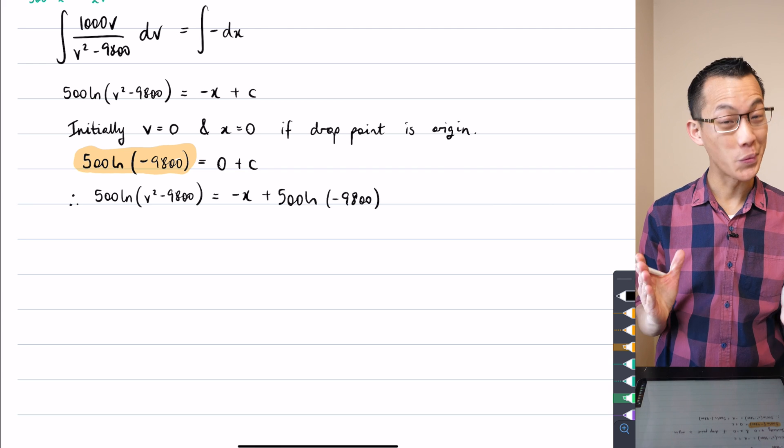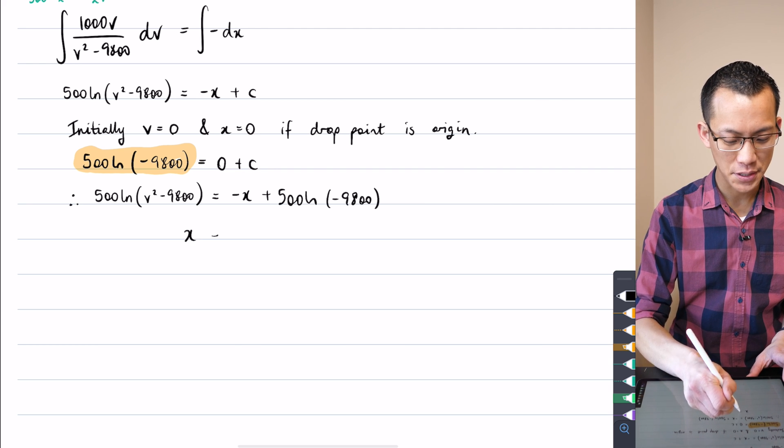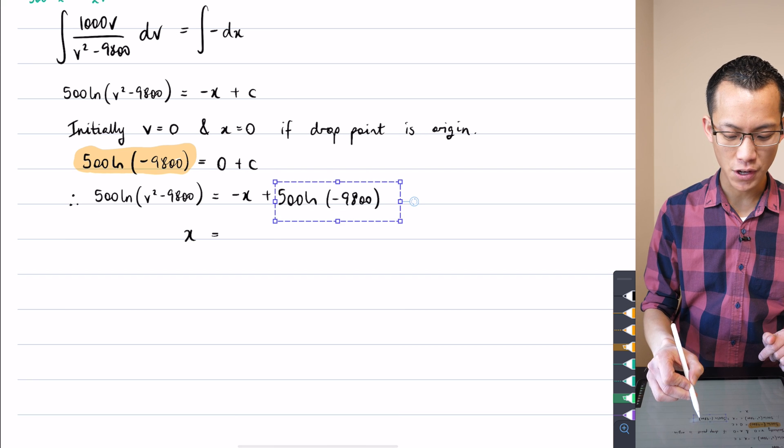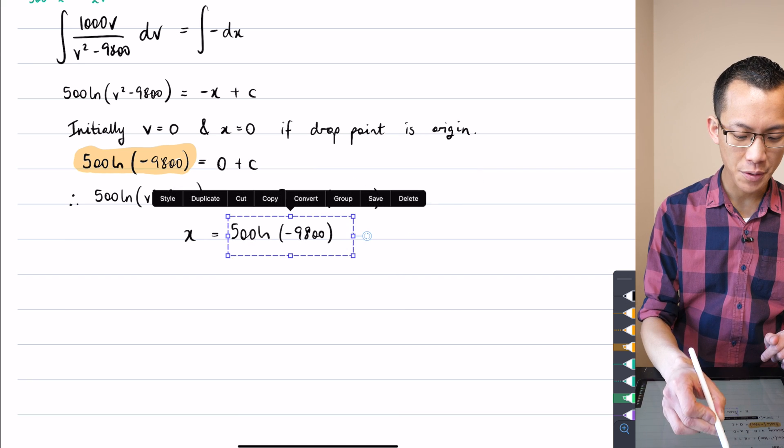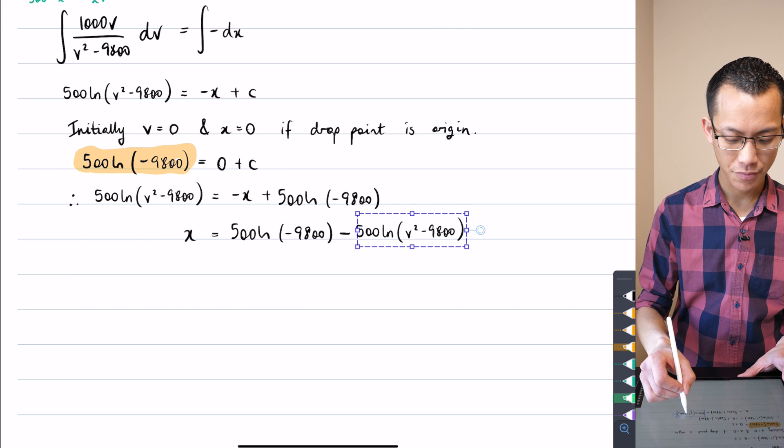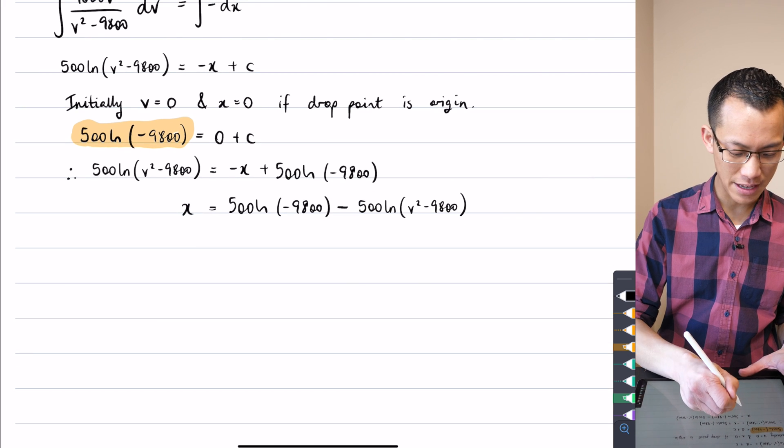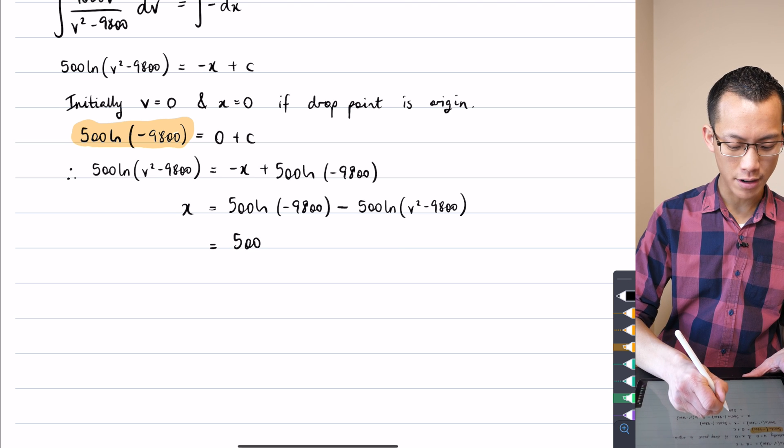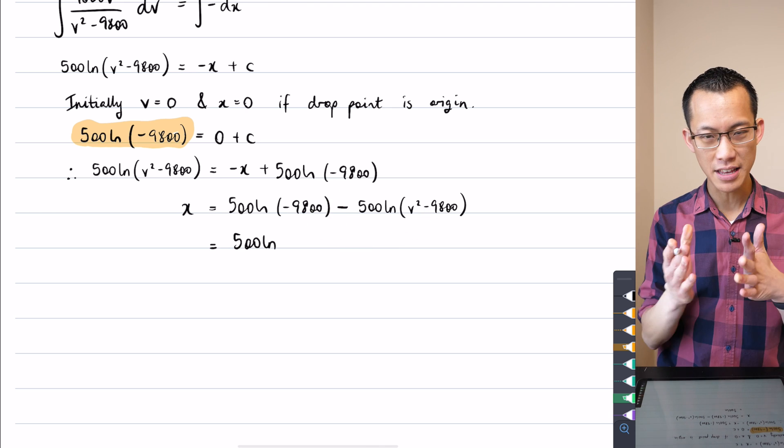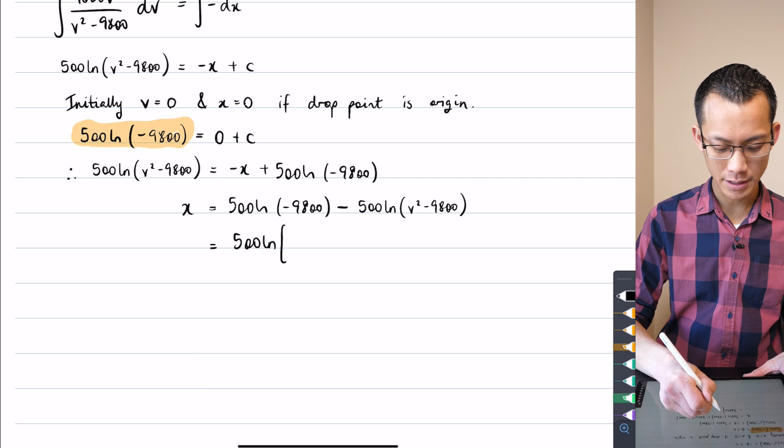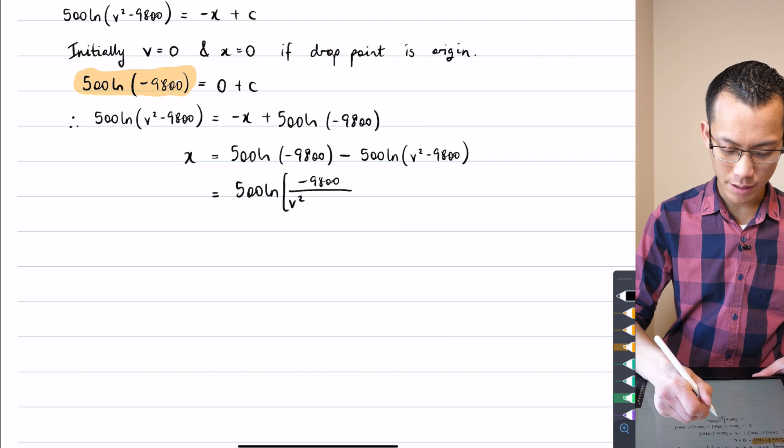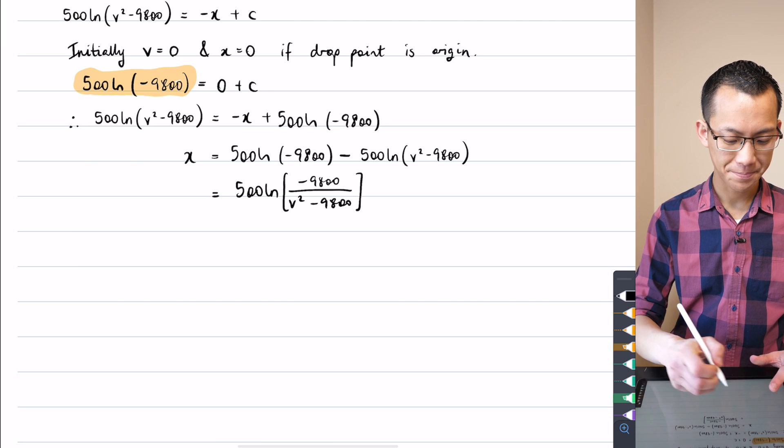All right and now what I want to do here is I just want to rearrange this a bit. If I add x to both sides that will make x positive and now it's the subject. I'm going to subtract this term from both sides. Once you have 500 out the front and then you've got these two log terms when you subtract a log we know that's the quotient of the terms on the inside. So I'll get negative 9800 on the numerator and v squared minus 9800 on the denominator. That's what's equal to x.